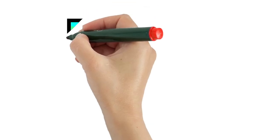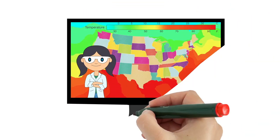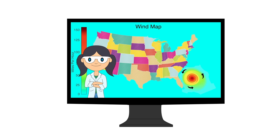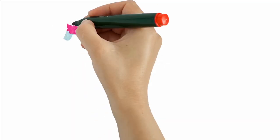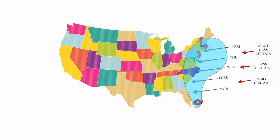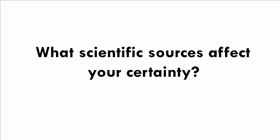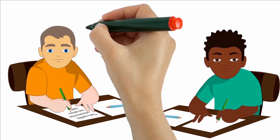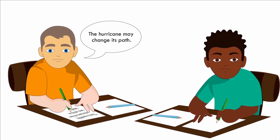Scientists are most confident in their predictions when they have a lot of data. This computer model is based on lots of data, like temperature, wind, barometric pressure, observations, and historical data from past hurricanes. Back to our map: the storm will move up the coast and may arrive in New York City on Thursday or Friday. There is a possibility that the storm will slow down and hit on Saturday, or the hurricane may change its path and bounce off into the ocean. We will be more certain when we get closer to the weekend.